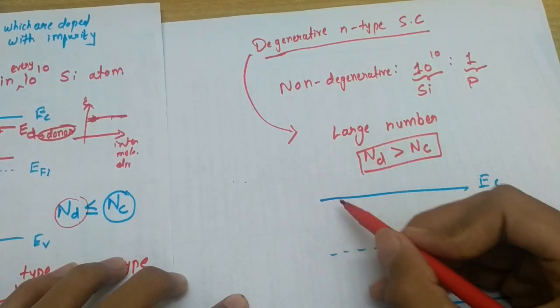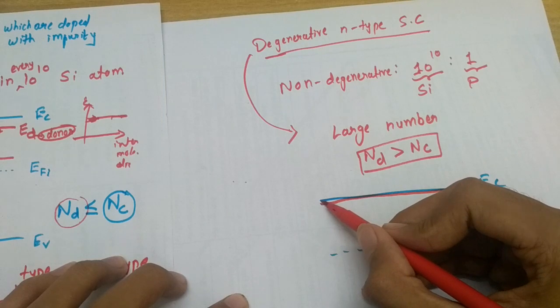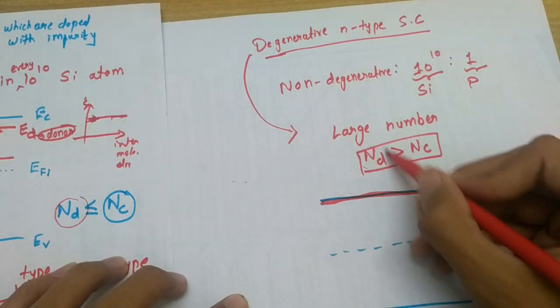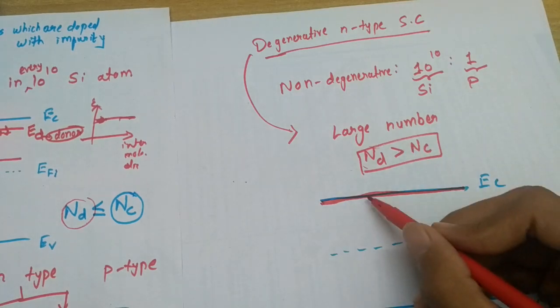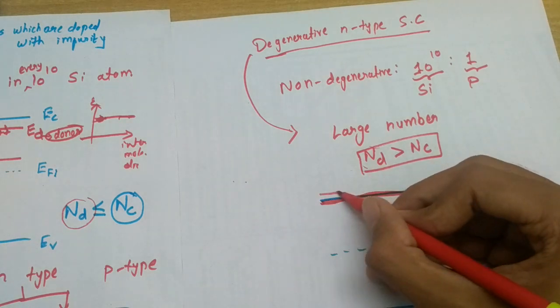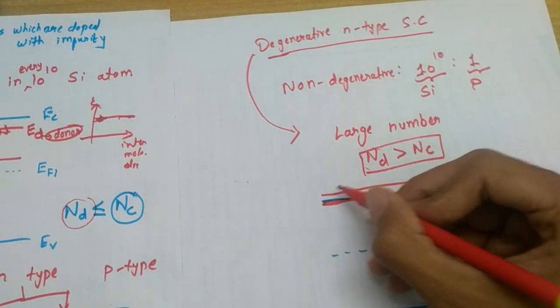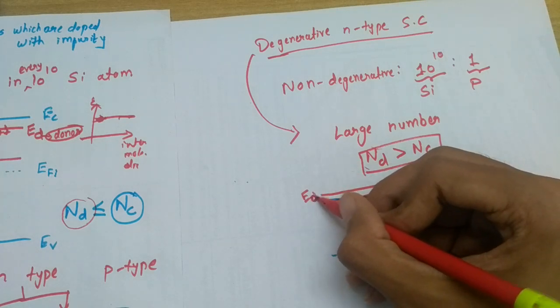In this degenerative case, this will move or we can say overlap at one stage if we add more and more impurities, that is phosphorus atoms. There is possibility of overlapping and also possibility that it can cross. Over here we have our donor impurity level ED.